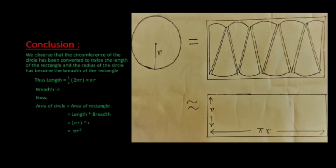Now area of circle equals area of rectangle equals length into breadth equals πr into r equals πr². Hence we proved our claim.